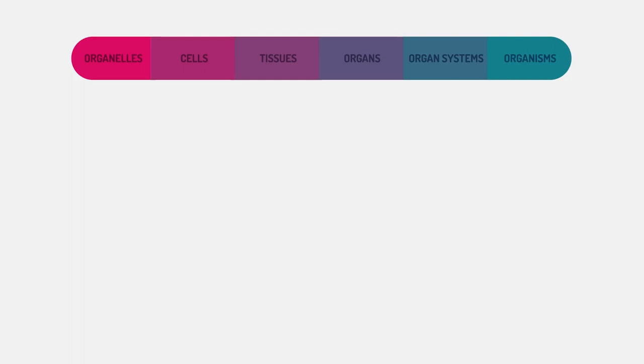From smaller than cells to bigger than organs. In unicellular organisms, the single cell performs all life functions. However, multicellular organisms have various levels of organization within them.